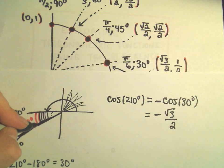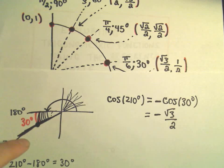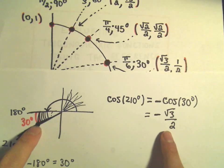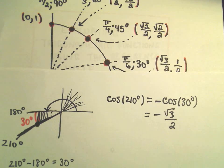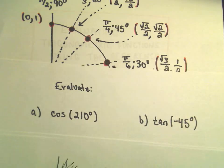That makes sense — if you think about where the angle hits the circle in quadrant 3, it's going to have a negative x-coordinate there.